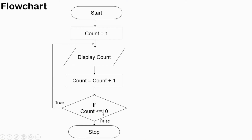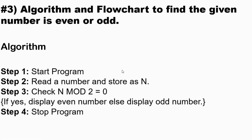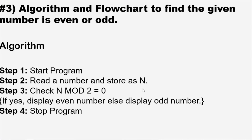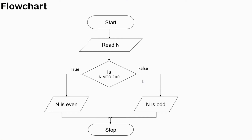In question number three we have an algorithm and flowchart to find whether a given number is even or odd. Step 1: start. Step 2: read a number and store it as N. Step 3: check N mod 2 equals zero — if yes, display 'even number'; otherwise display 'odd number'. Step 4: stop program.